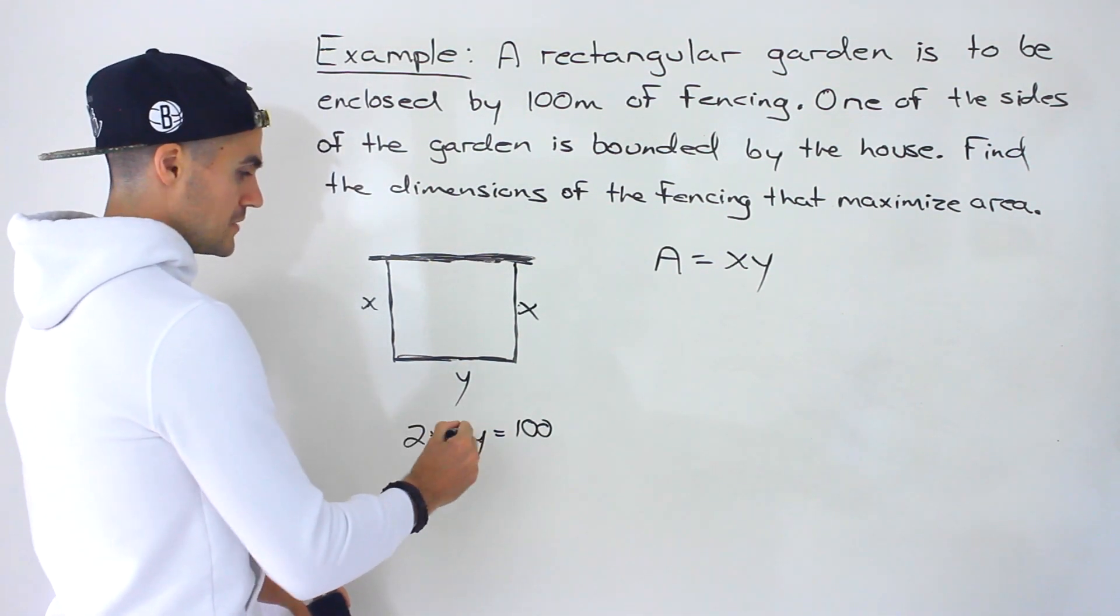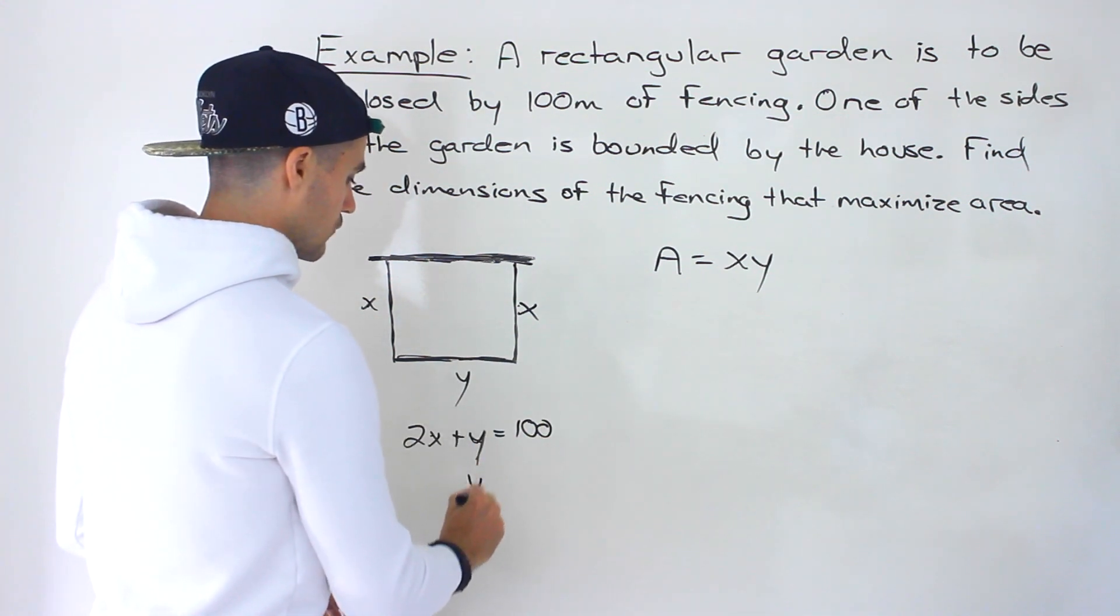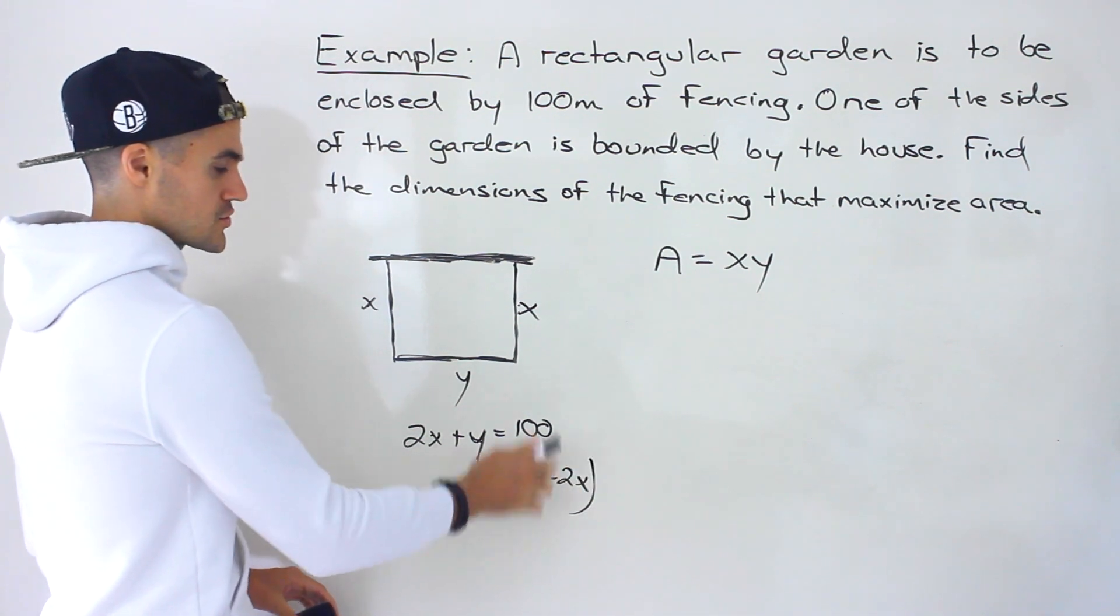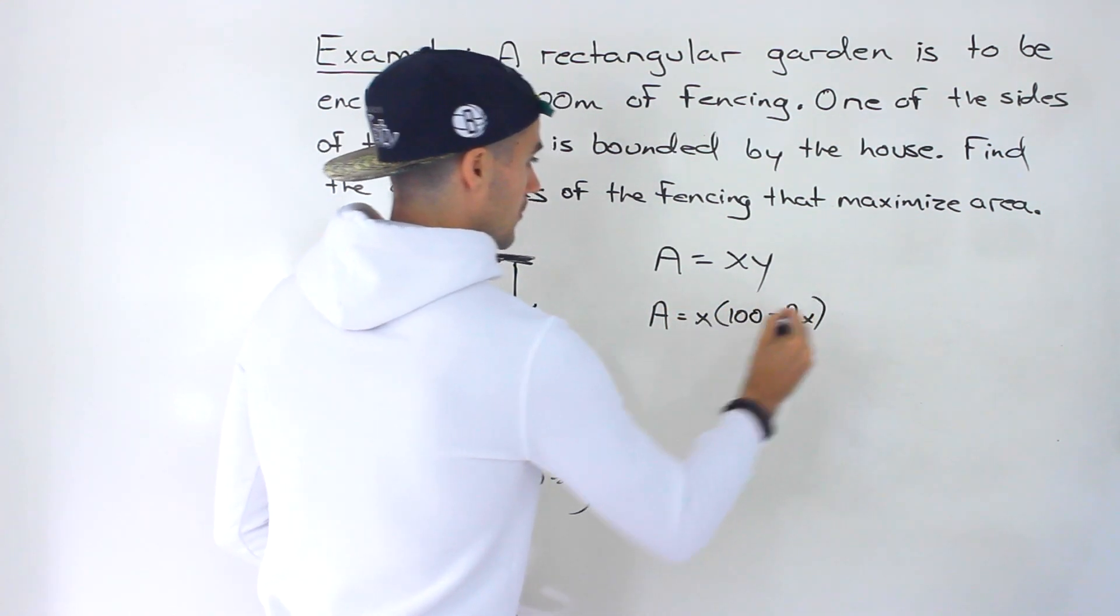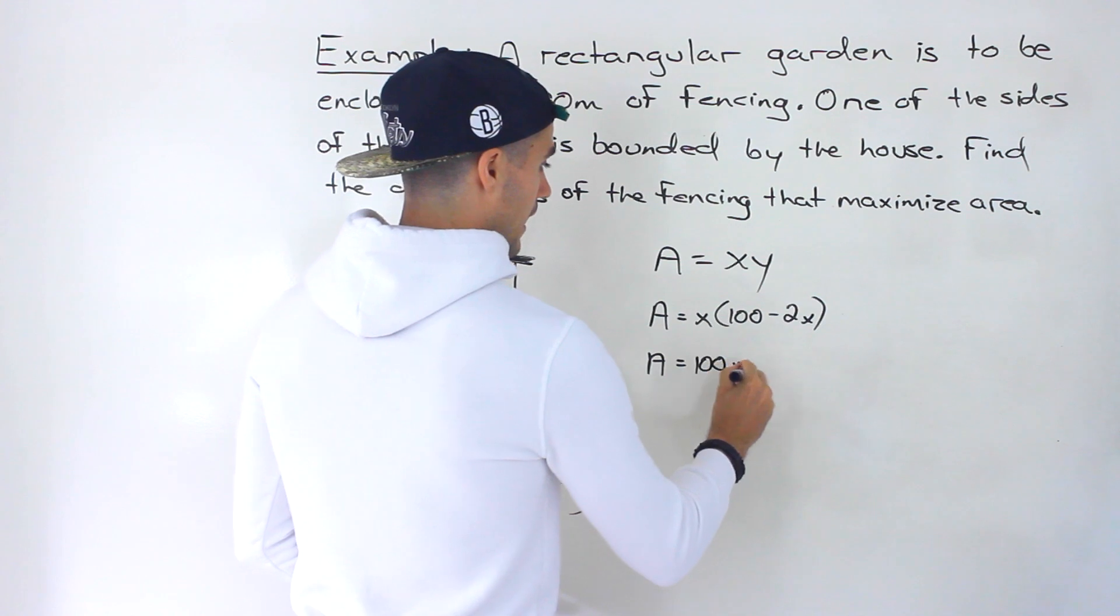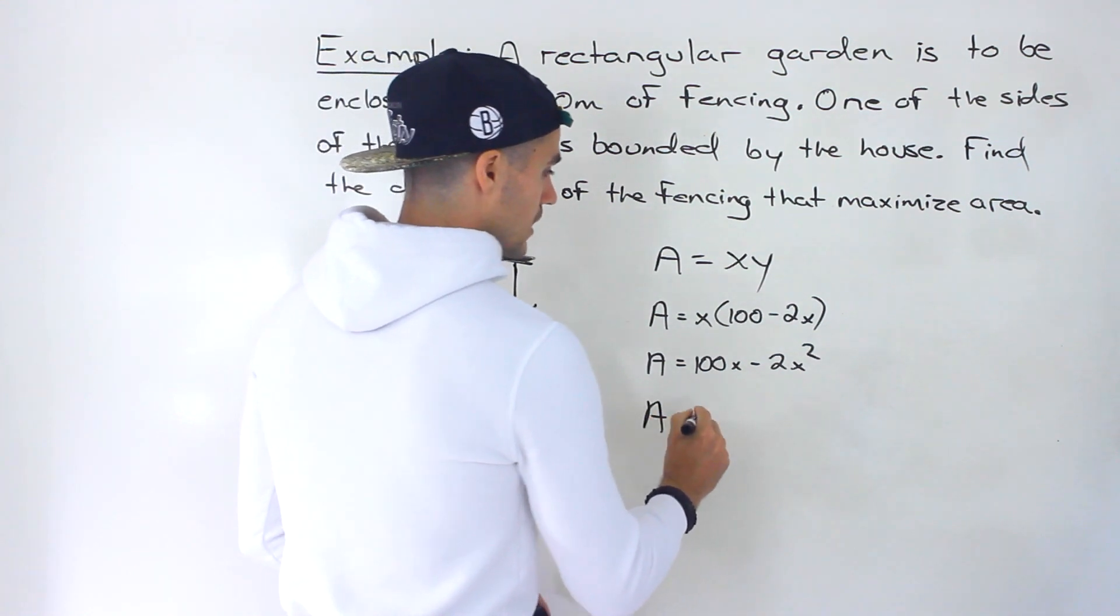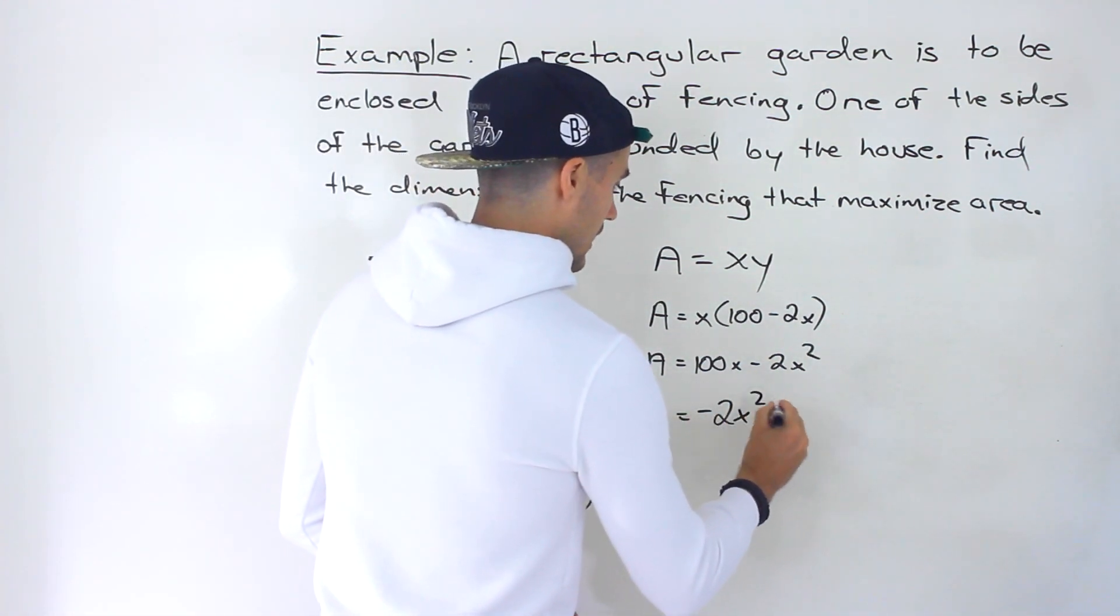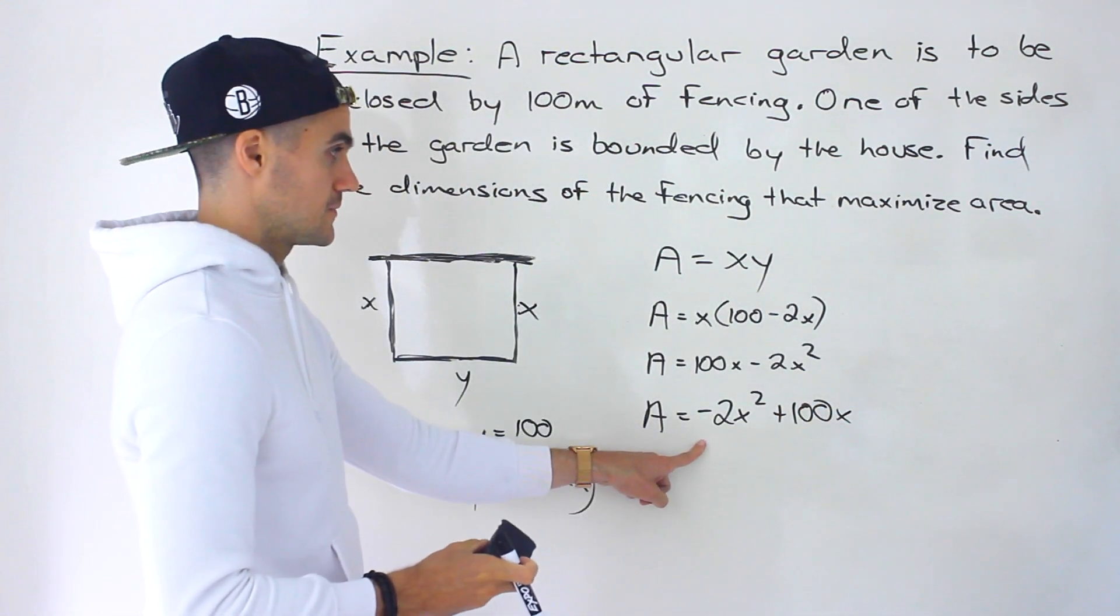Now we could isolate for the X or the Y, but because the Y is already by itself here, I feel like it's easiest to isolate for that. So let's bring the 2X over. We'll have Y equals 100 minus 2X like that. And then we could take this expression, plug it in for Y. We'd end up with A equaling X times 100 minus 2X like that. So here we'd end up with 100X minus 2X squared if we expand it. And so notice now we have the area in terms of just the width, just in terms of X, just in terms of one variable. And the relationship is a quadratic, as you could see over here.